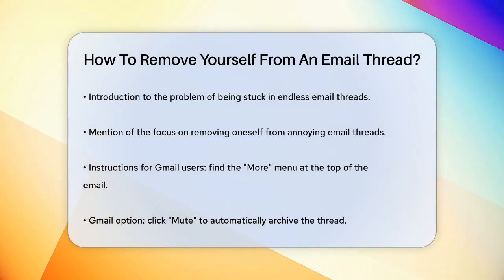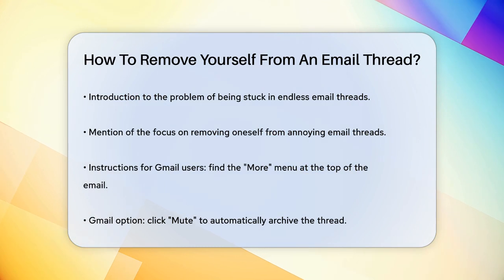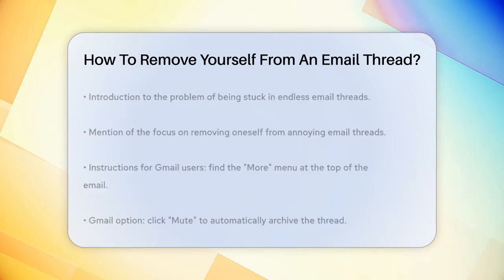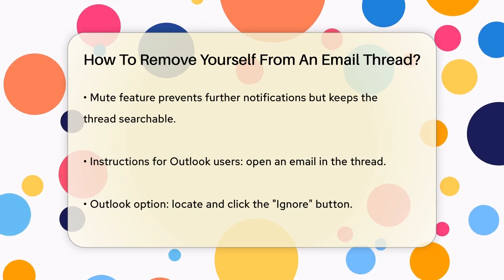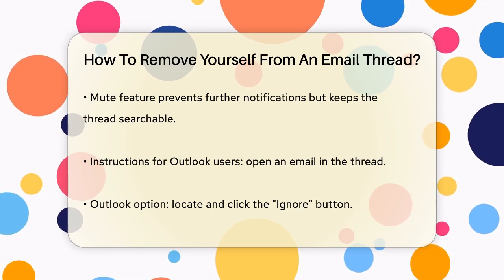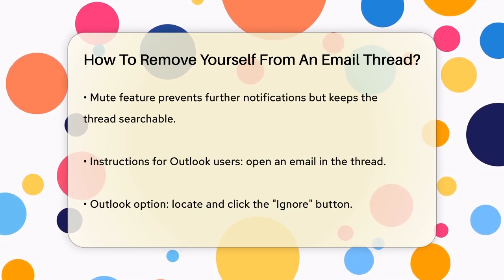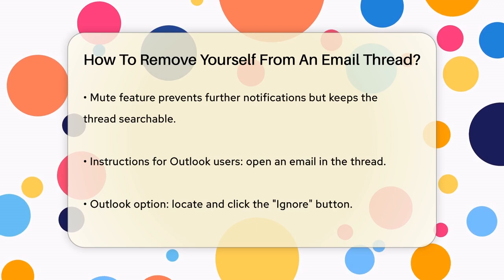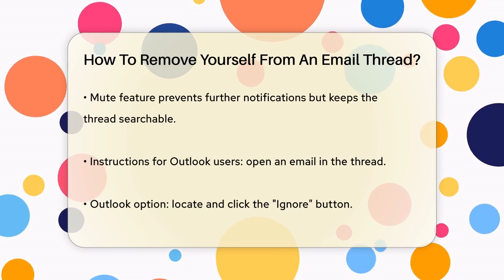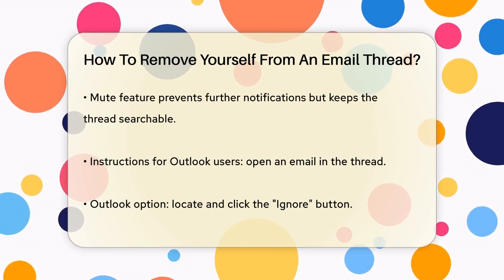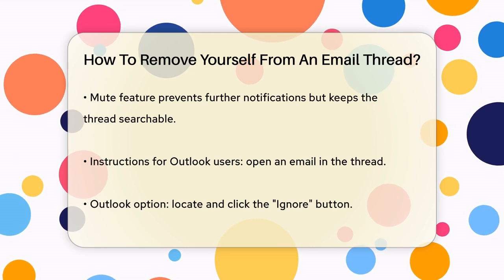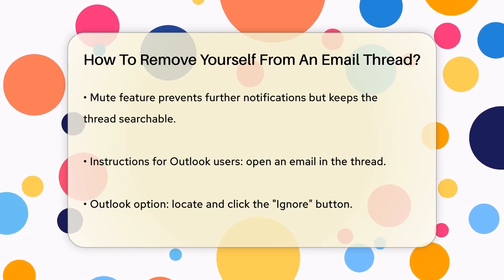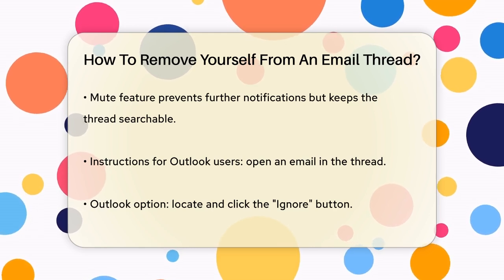If you're using Gmail, the process is quite simple. When you open the email, look for the More menu at the top. Click on it, and you'll see an option that says Mute. Clicking on Mute will automatically archive the thread, so you won't receive any more notifications from it. The thread will still be in your email and searchable, but it won't clutter your inbox.